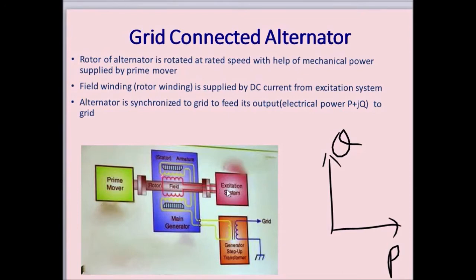Therefore, the alternator continuously feeds active power and reactive power into the grid. The reactive power fed into the grid depends on how much the generator is excited, and the active power fed into the grid depends on how much mechanical power is provided to the rotor of the alternator.